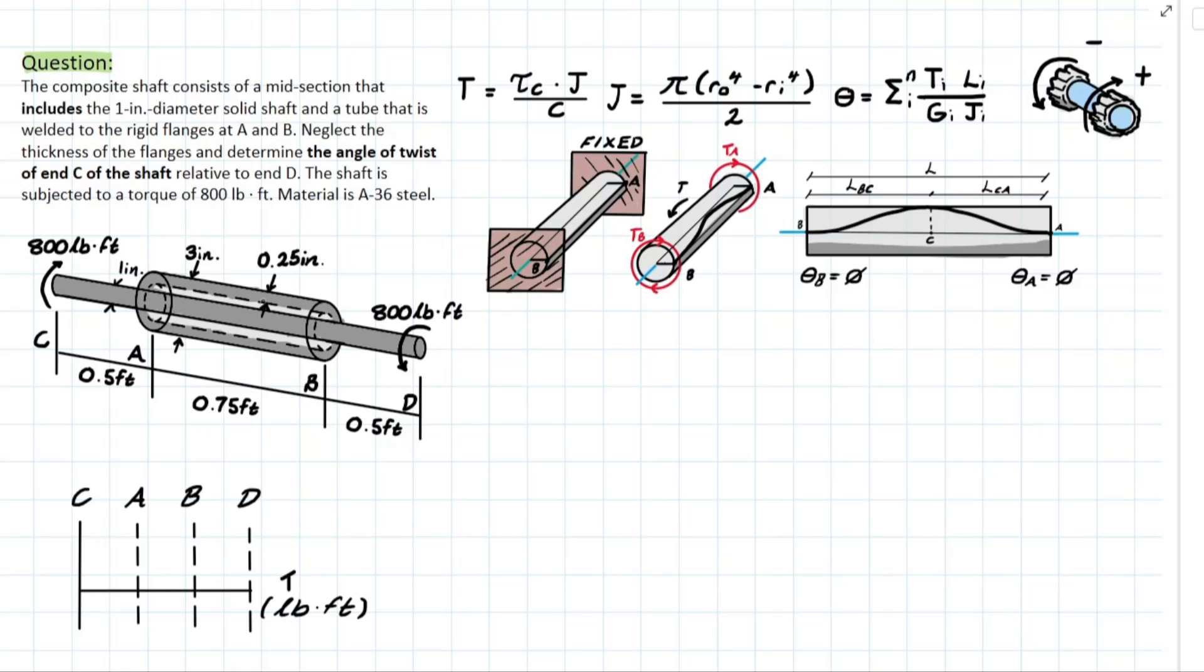Now it wants us to neglect the thickness of the flanges and to determine the angle of twist of NC of the shaft relative to ND. That's going to be important later. The shaft is subject to a torque of 800 pounds per foot and the material is A36 steel.